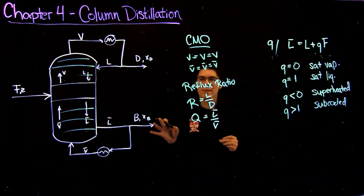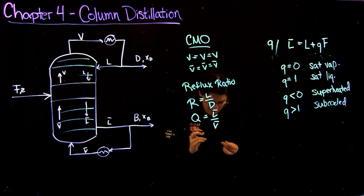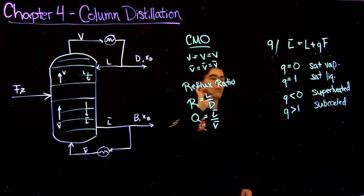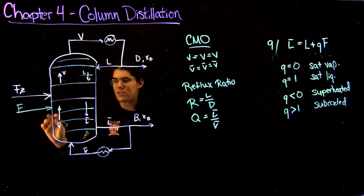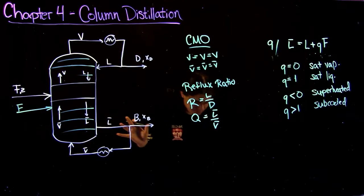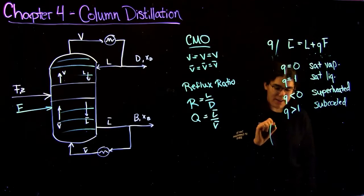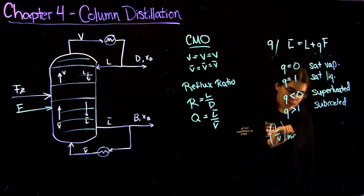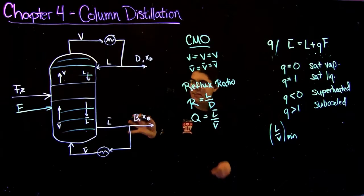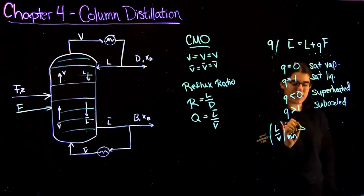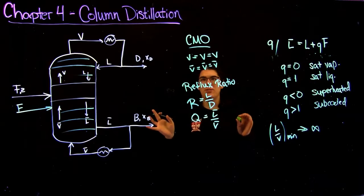Graphically, your Q line is going to be intersecting your top and bottom operating lines, which I'll show a little bit more later. The Q line is especially useful when you have multiple feed streams coming in — you can use your different Q lines to help you find more about your column. One final definition: L over V minimum, basically your minimum reflux ratio, is the minimum you can have in order to still have separation, and this corresponds to an infinite number of stages in your column.